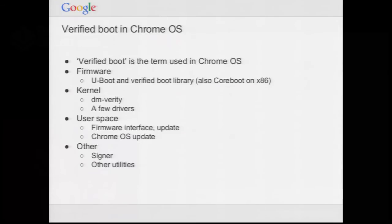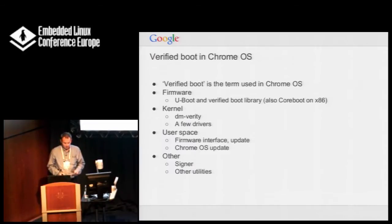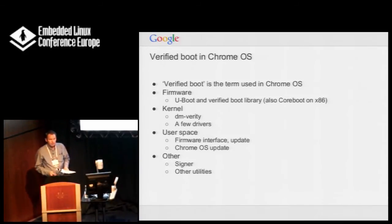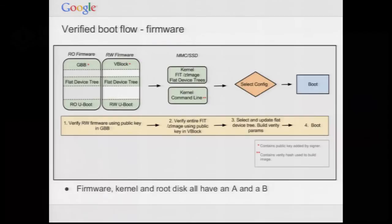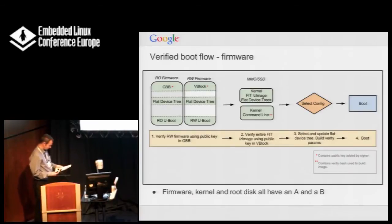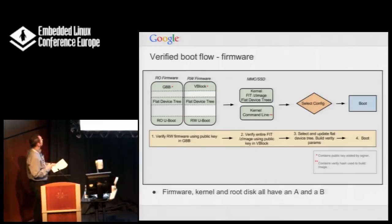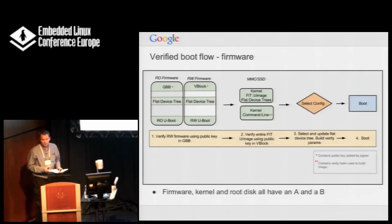Here's how verified boot runs in Chrome OS. There are a number of different parts: firmware, kernel, user space, and some other things as well. In the firmware flow, over here we have the read-only firmware. There's read-only U-Boot, a device tree, and what's called a Google Binary Block which has recovery mode screens, keys and things like that inside it. This is all in read-only memory.